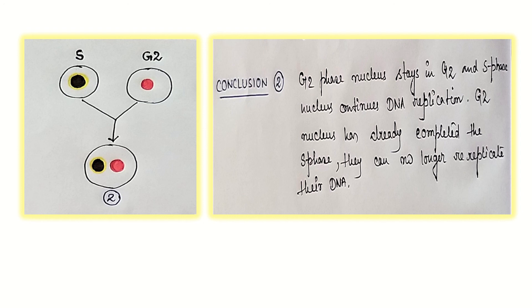G2 nucleus has already completed S phase. They can no longer replicate their DNA. This happens due to a special reason. Various investigations had brought to us the fact. Why is this happening?